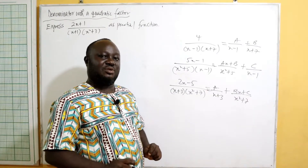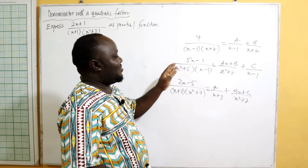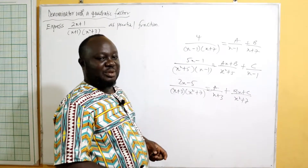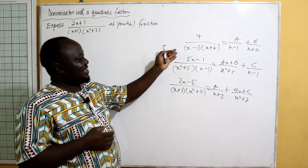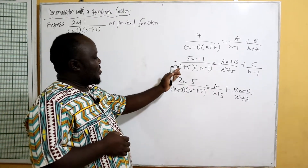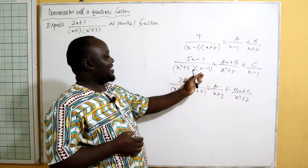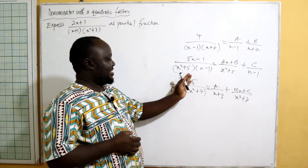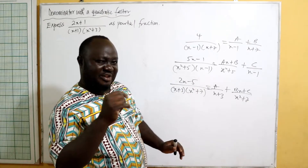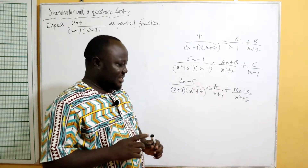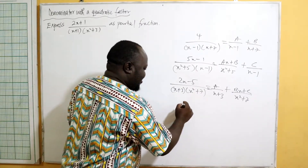So to summarize: one linear and one linear gives two linear fractions. A linear and a quadratic gives one linear fraction plus one fraction with a quadratic denominator. Now be careful — sometimes I can give you a scenario like four x minus one divided by x squared plus five x plus six.